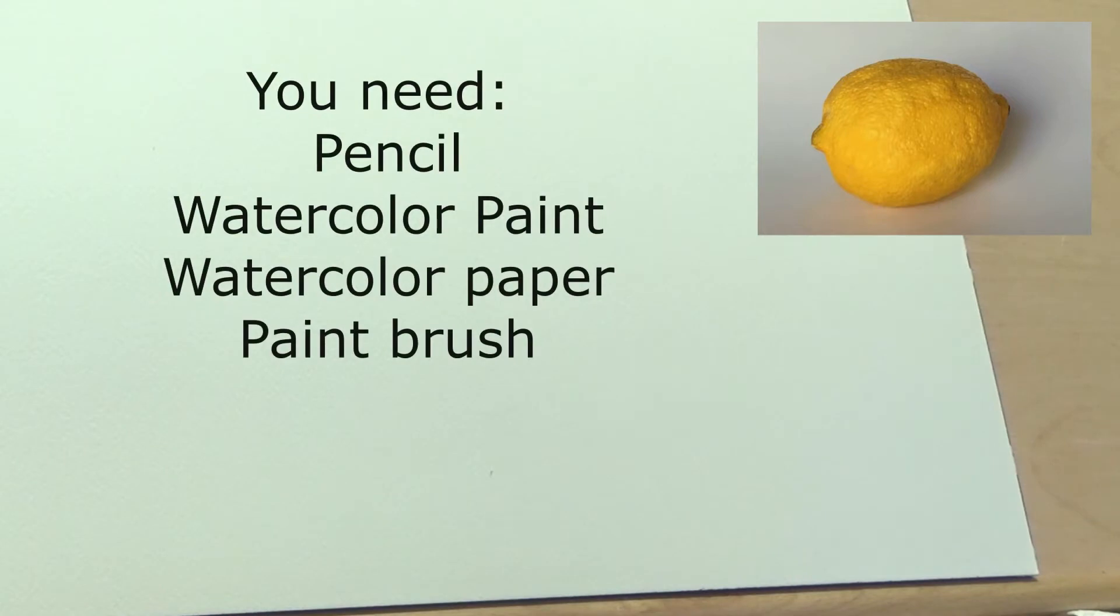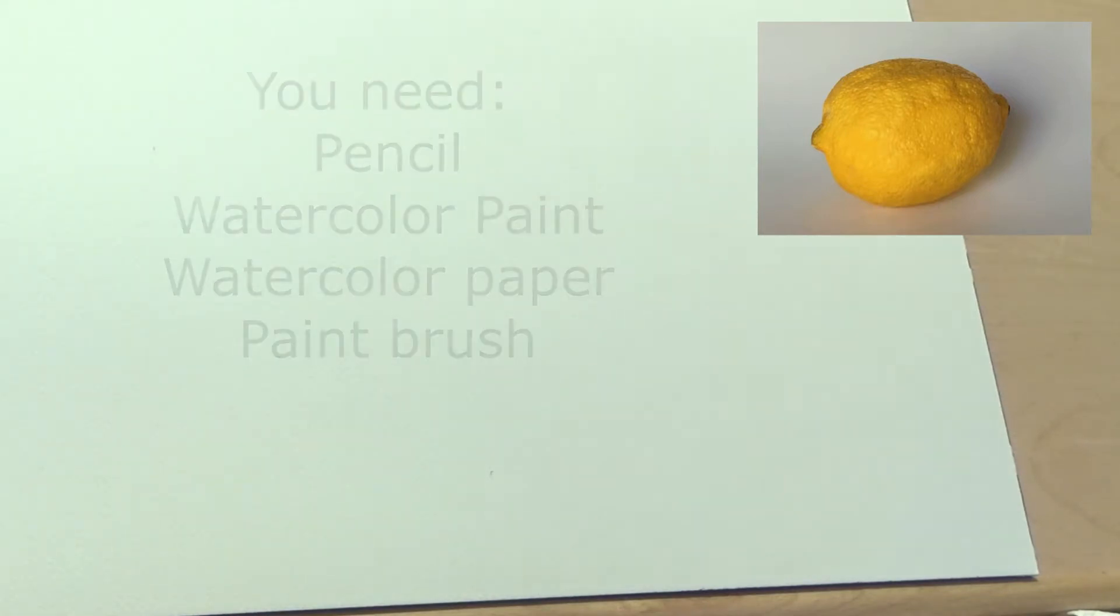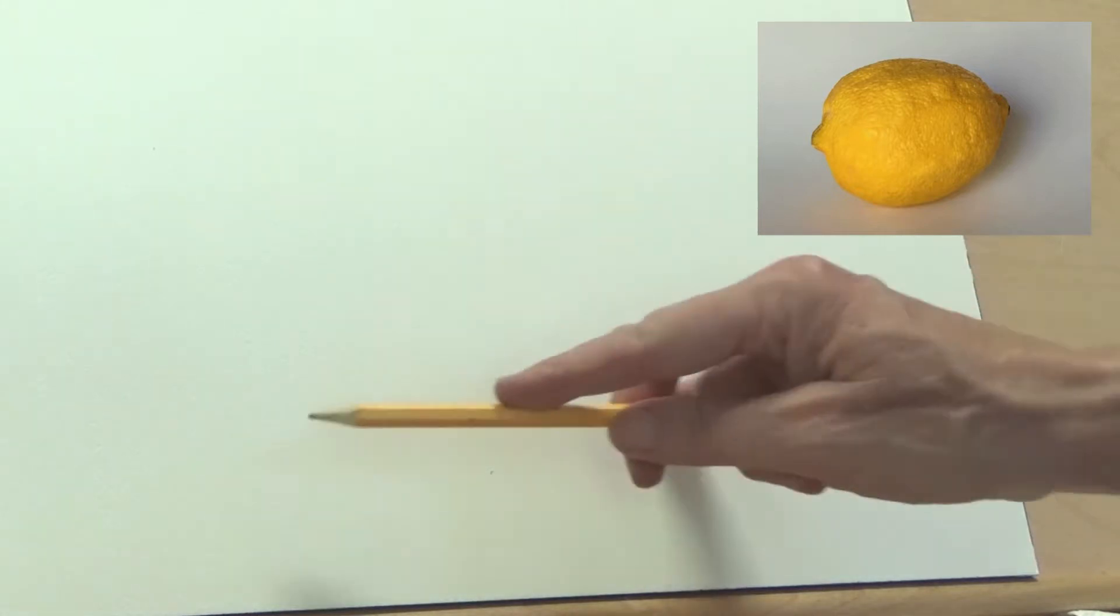We are now ready to draw or paint a lemon, so let's start out with a contour line. As we do the contour line, I want you to be aware of the shadows. I'm showing you the picture of the lemon right now on the corner, so I'll keep that there for us.